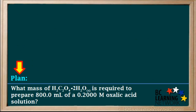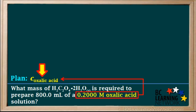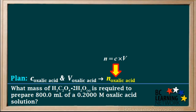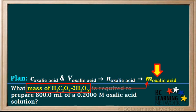We'll start by creating a plan. We're given the molar concentration of oxalic acid, so we'll write C oxalic acid here for concentration. We're also given the volume of oxalic acid solution, so we'll write V oxalic acid here. We can use the equation n equals C times V to calculate n, the moles of oxalic acid required. Once we have the moles, we can then find the mass of the oxalic acid dihydrate we need to start with.